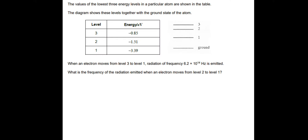So here's a question — pause and have a go before I show you how to do it. The values of the lowest three energy levels in a particular atom are shown on the table. The diagram shows these energy levels together with the ground state of the atom. When an electron moves from level 3 to level 1, radiation of frequency 6.2 × 10¹⁴ Hz is emitted. What is the frequency of the radiation emitted when the electron moves from level 2 to level 1? Pretty straightforward — we just look at the energies for levels 2 and 1 and find the difference.